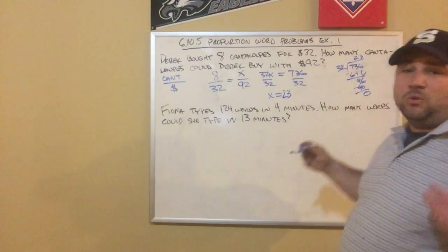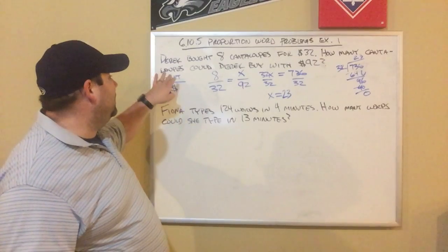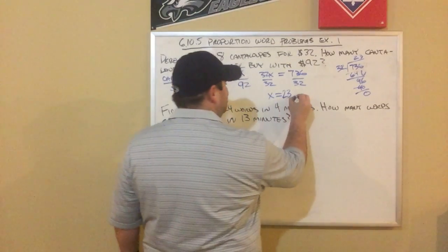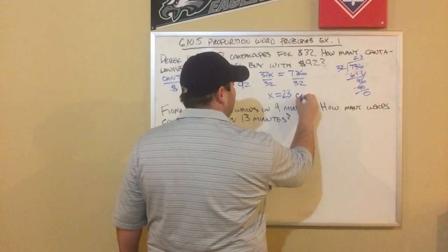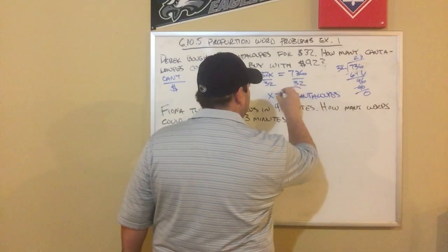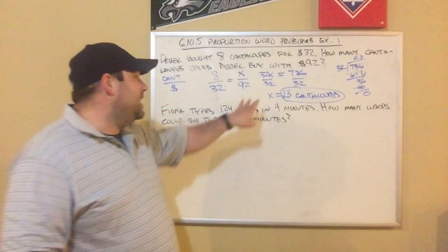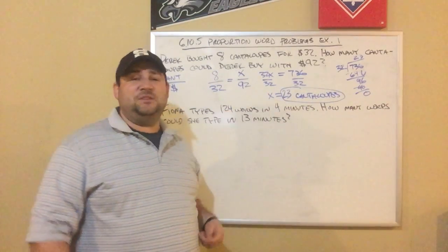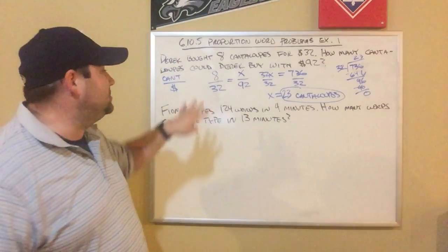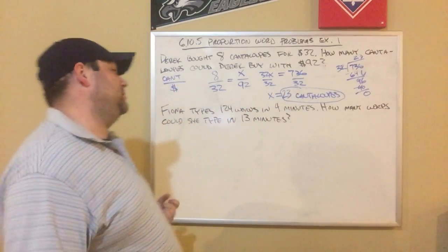Remember, this was a word problem, so you need to make sure you answer it accordingly. The question was how many cantaloupes could Derek buy? We got 23, so he can buy 23 cantaloupes. That is my answer — not just 'x equals 23.' Our answer is 23 cantaloupes. We used the proportion as a formula, a way to get the answer, but our final answer is 23 cantaloupes.